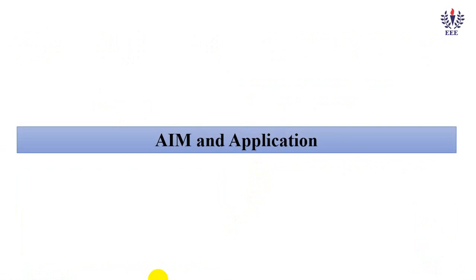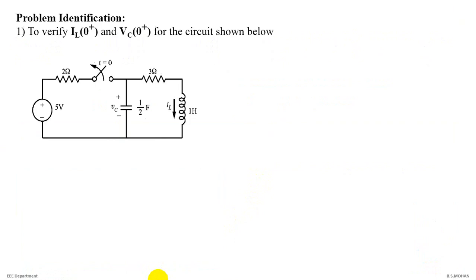Let's see the aim and application of the next experiment. The aim is to verify that IL, current through inductance at 0 plus, and voltage across capacitance at 0 plus for the given circuit.